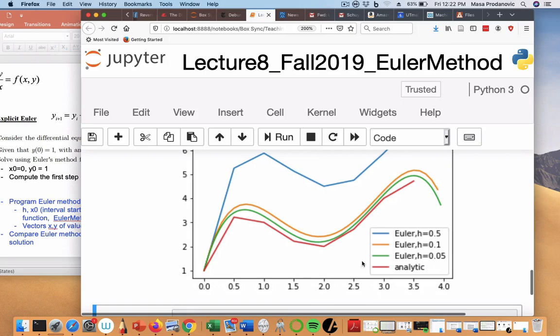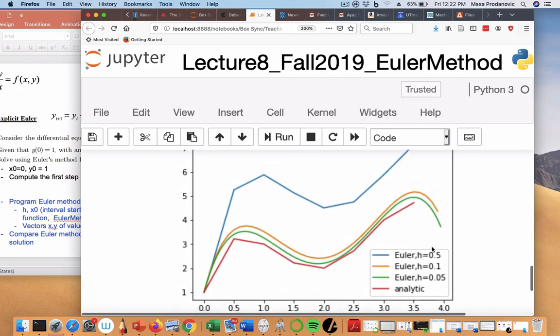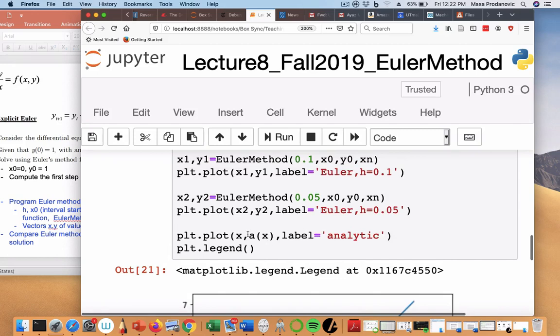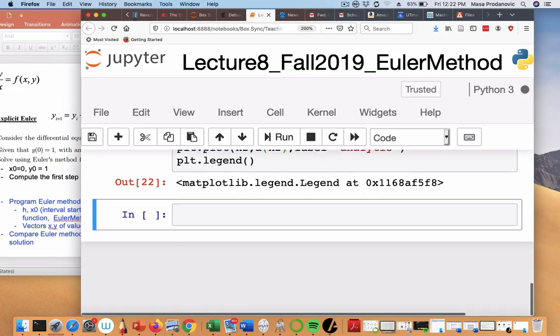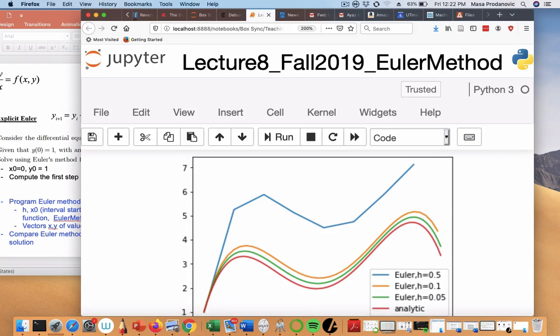So I can now see how with decreasing step, 0.5, 0.1, 0.05, I get closer to analytic. This analytic solution looks choppy because I chose to plot it that way. I should actually plot it for this x2, because it has more points. It's up to me where I execute this. There we go. So now it's smoother. See what I did there? I just plotted for more points.